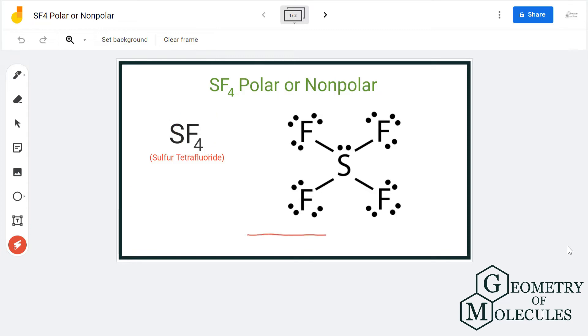So to understand its polarity, we will first look at its Lewis structure followed by the shape of this molecule to understand if there is a formation of any poles in this molecule. So when we look at its Lewis structure, we see that sulfur atom is in the center because it is the least electronegative atom as compared to fluorine atoms.